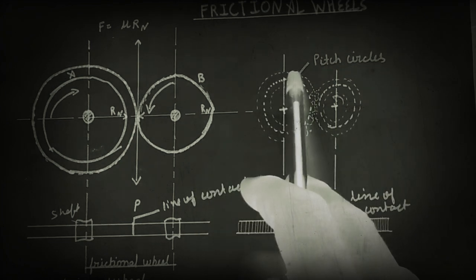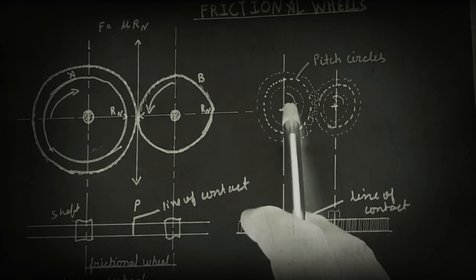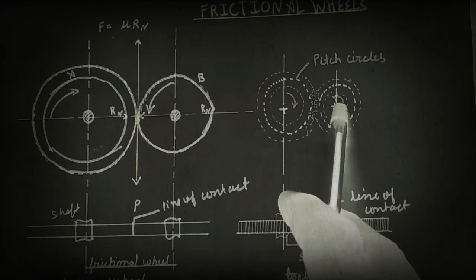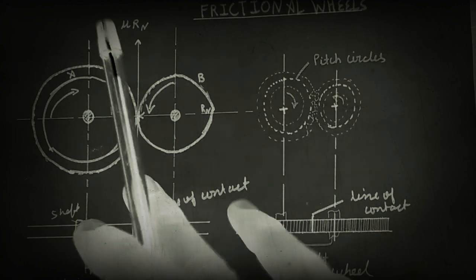There are projections on their periphery. When wheel A is rotated by the shaft, wheel B is also rotated by the shaft but in opposite direction compared to A.